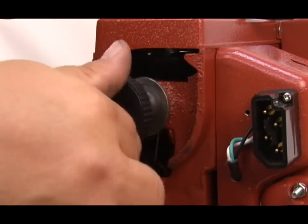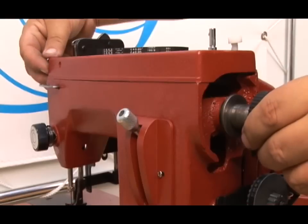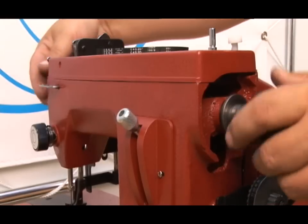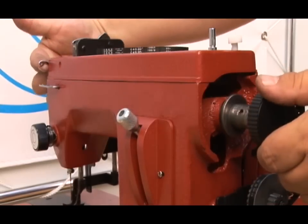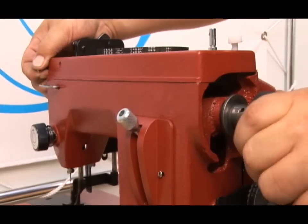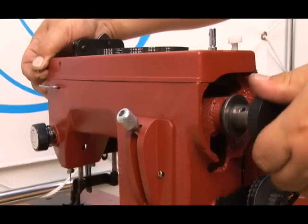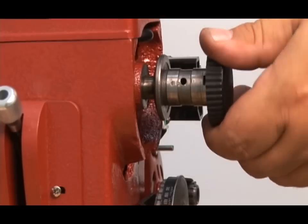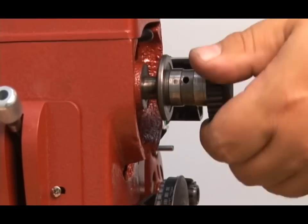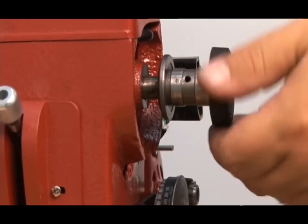Screw the clutch knob back on. Hold the take-up arm to prevent the shaft from rotating, as I'm doing on the left side. You can see the bushing coming off the shaft just by inserting those nuts.